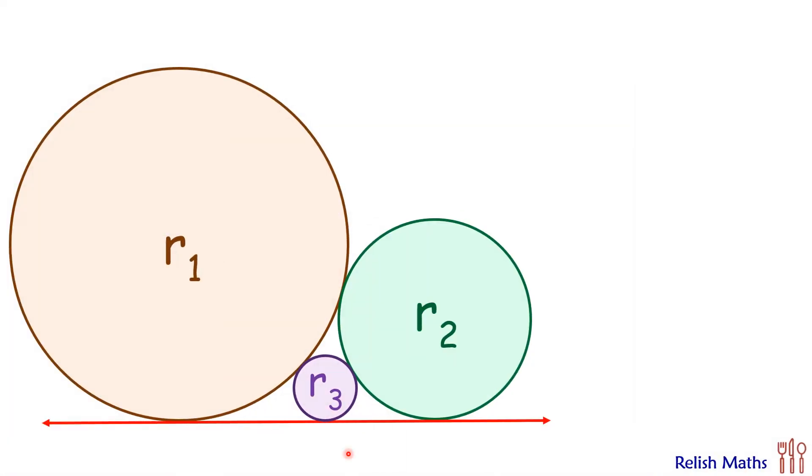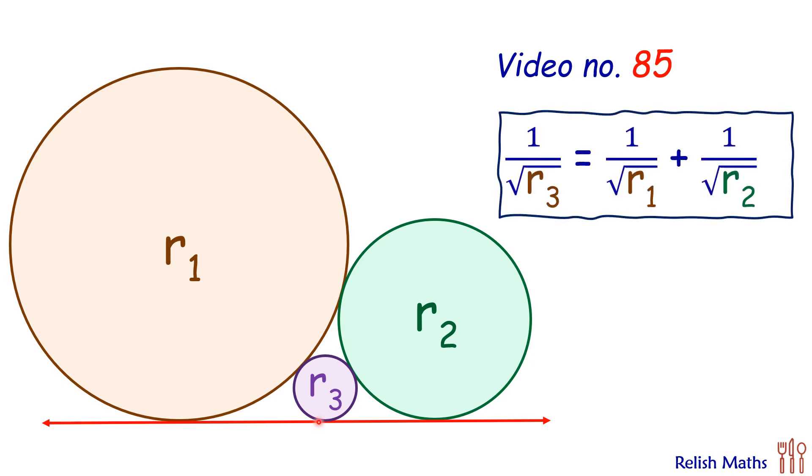For our solution we will use the formula to find the radius of the small circle which we derived in video number 85. The formula says 1/√r3 = 1/√r1 + 1/√r2.